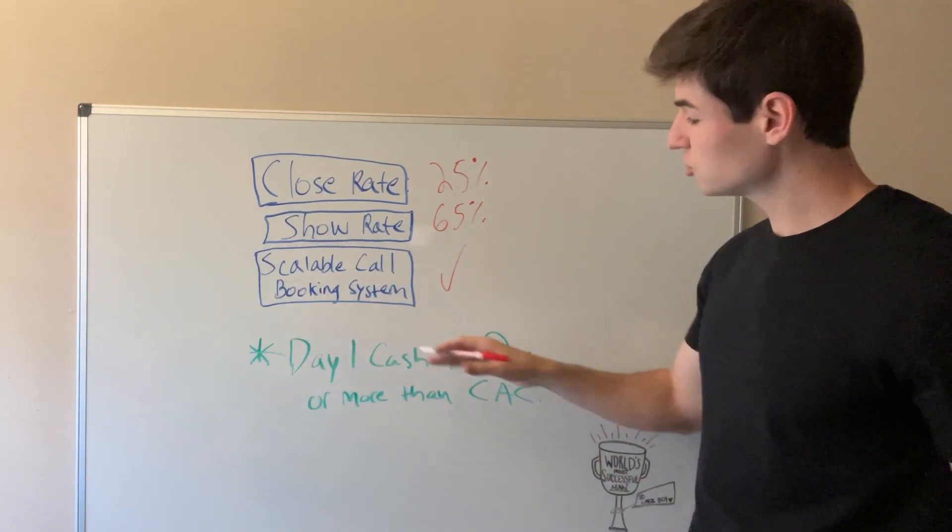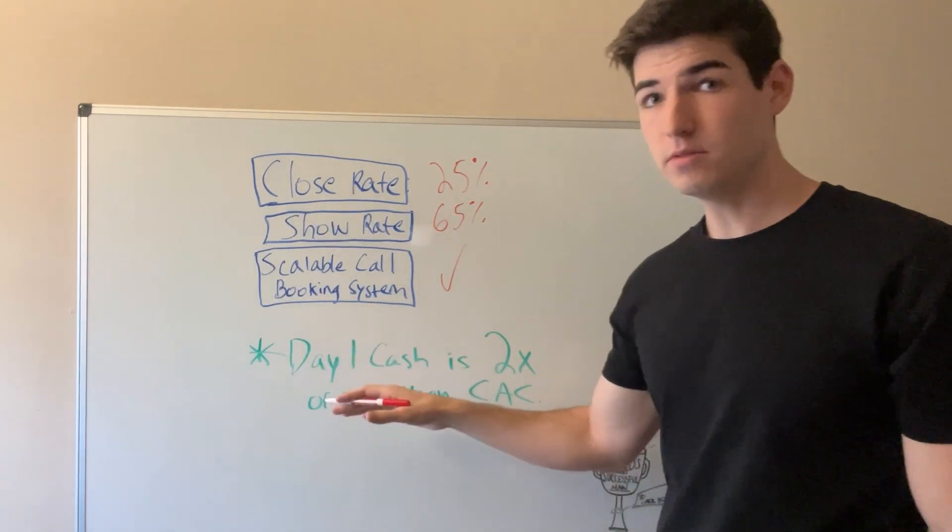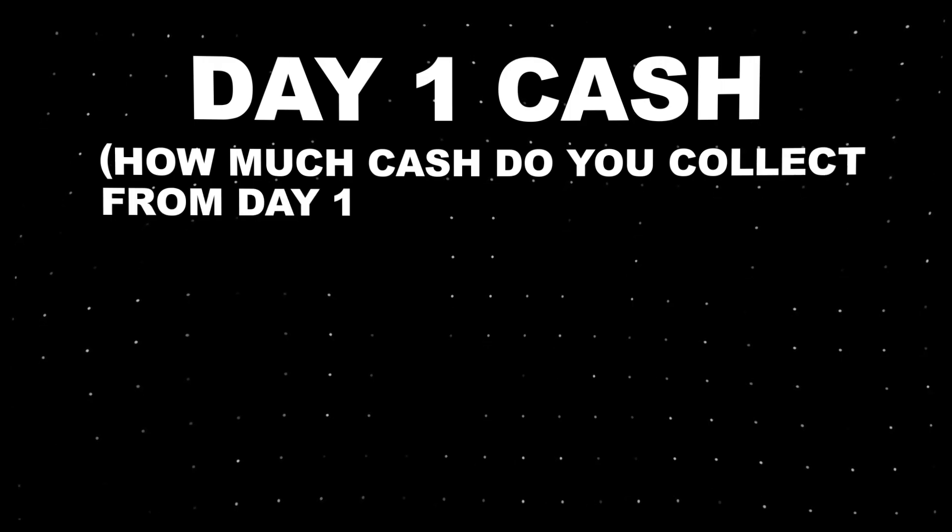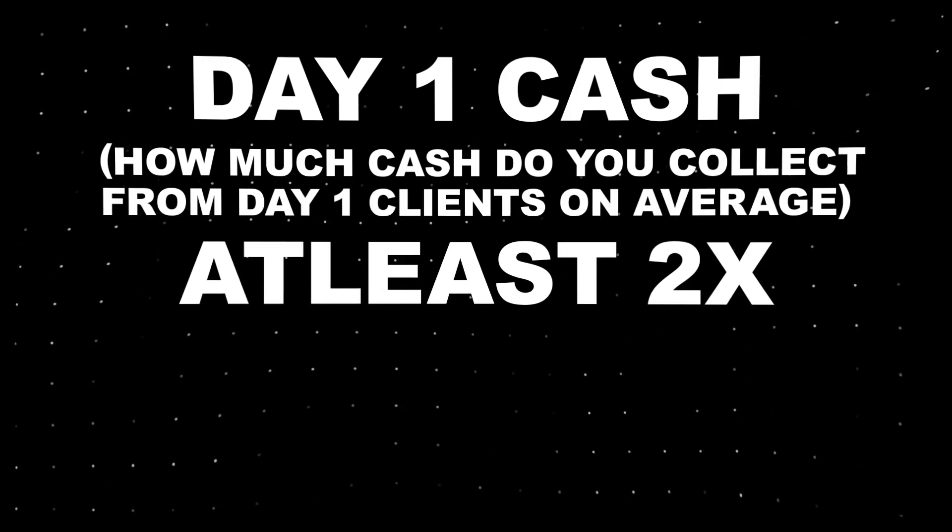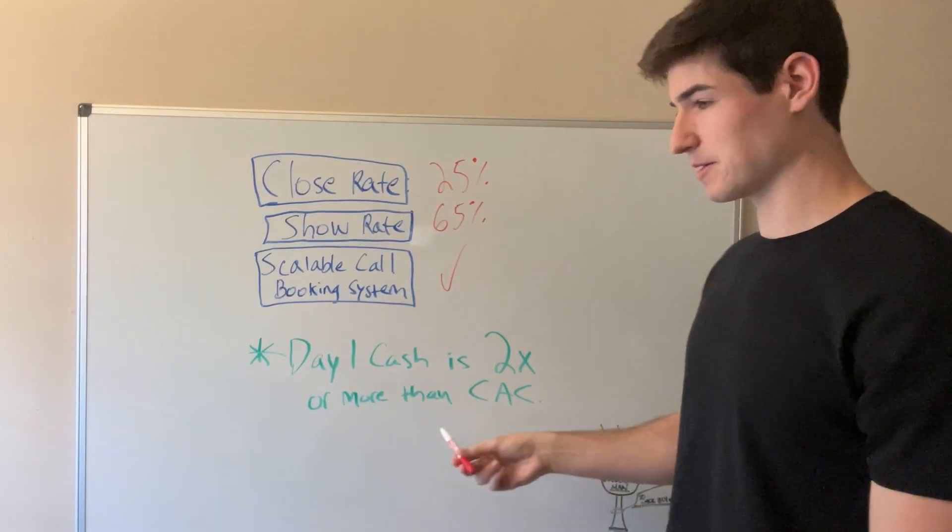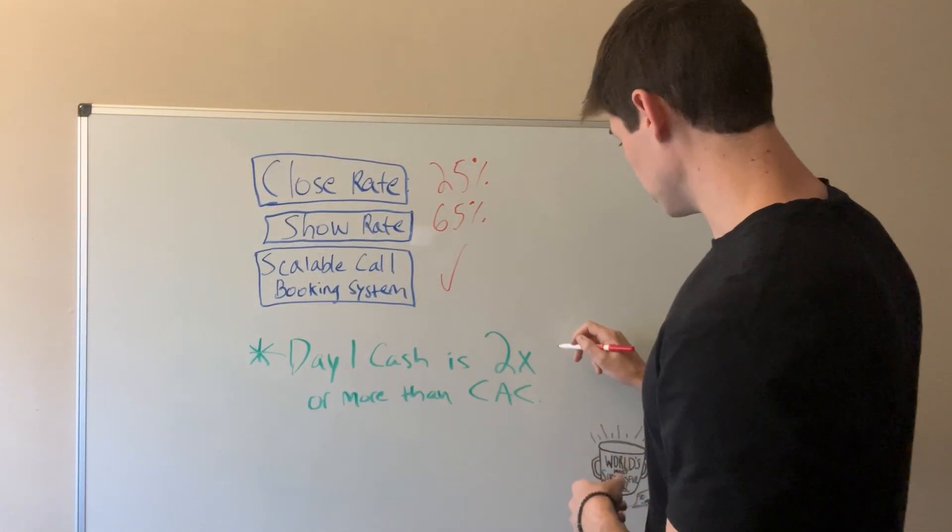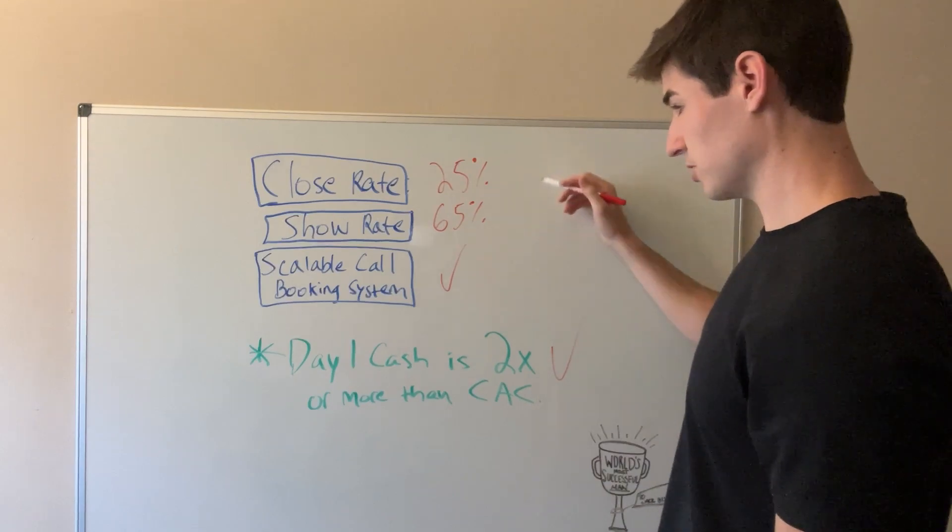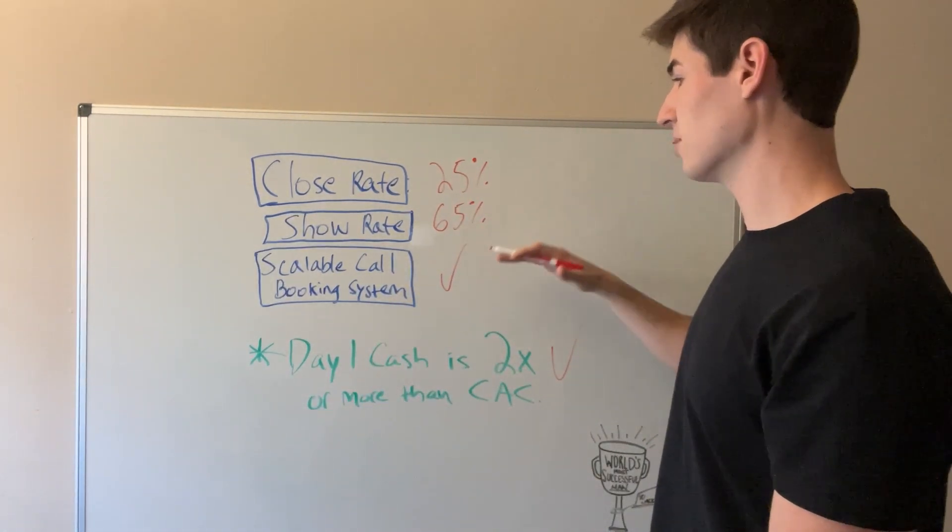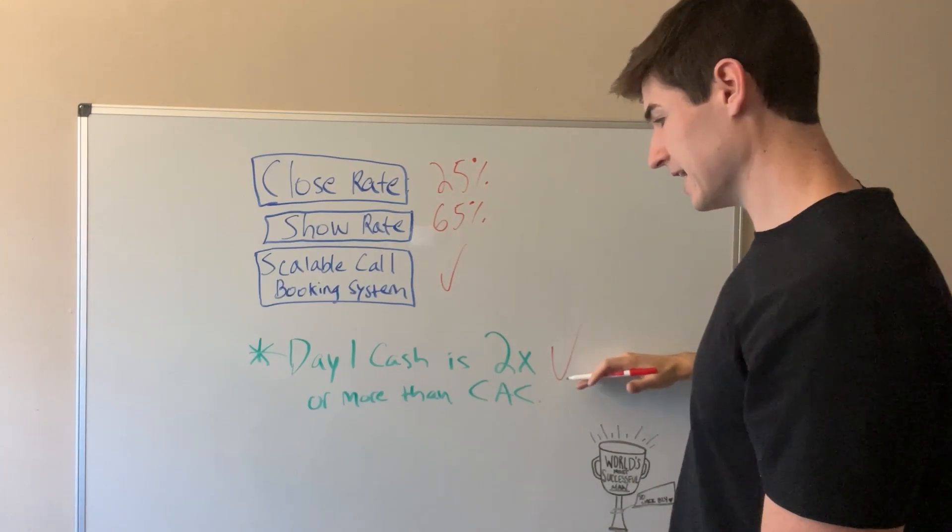You need that. And the last check you have is on the economics of the business. Day one cash, how much cash you collect on day one from your clients on average, should be at least 2x more than your client acquisition cost. That's the final check on the economics. Those are the four things. They're the conditions of a scalable business: close rate, show rate, scalable call booking system, and the economics.